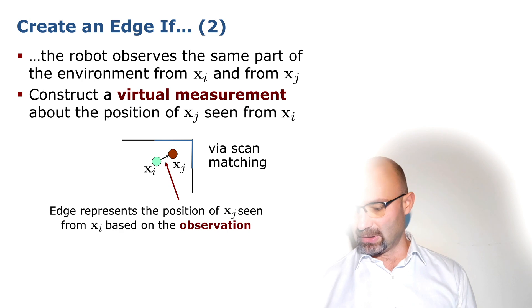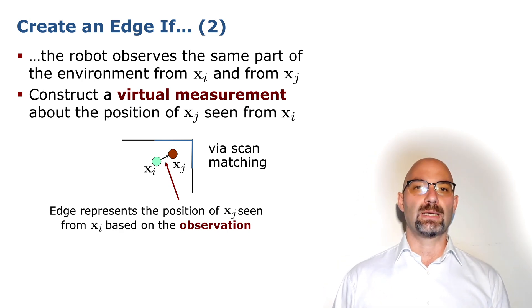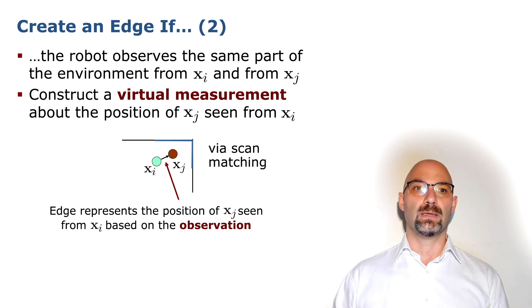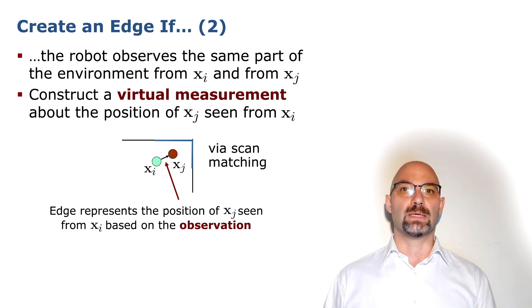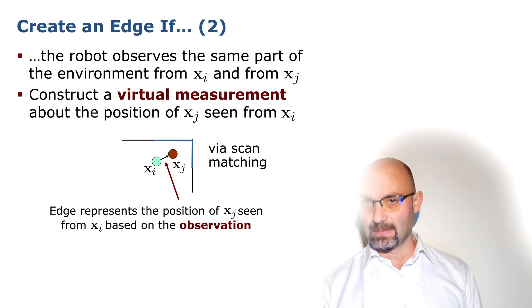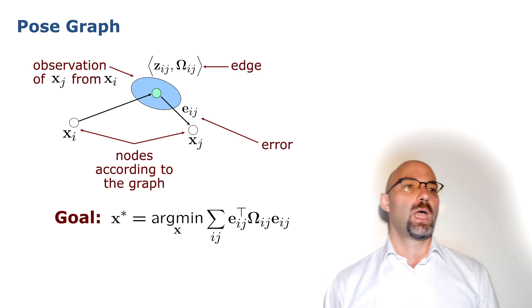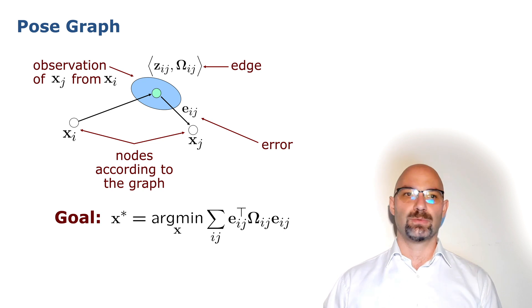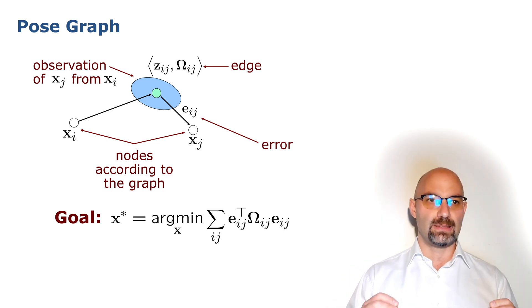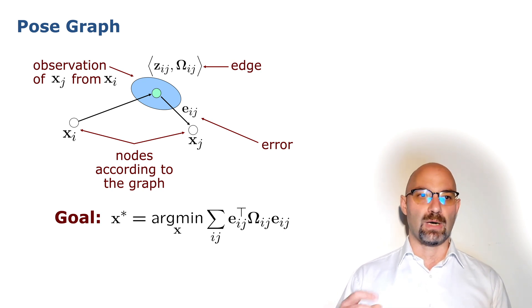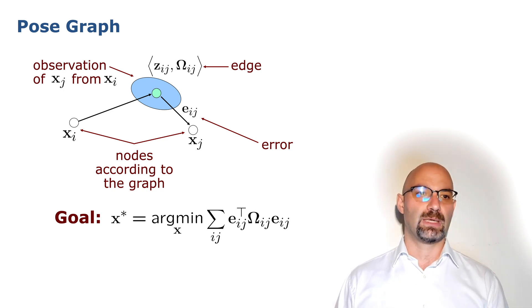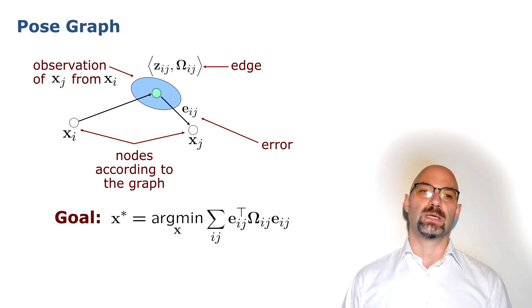We recall that registering environmental measurements such as scans would then return a position of the two sensors that results in the maximum alignment between the two clouds. From this relative position, we can then extract the measurement that we yield and we use to construct our optimization problem. Both edges coming from the odometry and edges coming from the registration process have the same type, which is a relative pose. So we can treat them homogeneously.